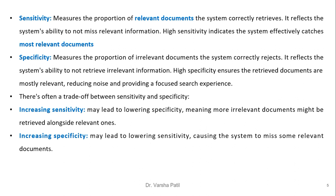Sensitivity measures the proportion of relevant documents the system correctly retrieves. It reflects the system's ability to not miss relevant information. High sensitivity indicates the system effectively catches most relevant documents. Specificity measures the proportion of irrelevant documents that the system correctly rejects. It reflects the system's ability not to retrieve irrelevant information. High specificity ensures that retrieved documents are most relevant, reducing noise and providing a focused search experience. There is a trade-off between sensitivity and specificity.